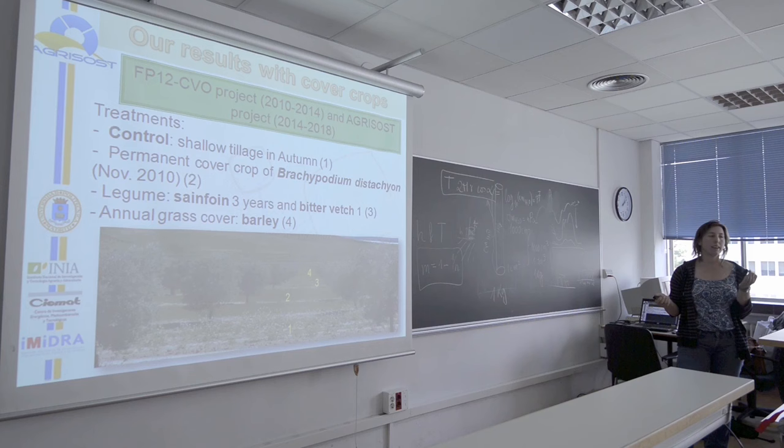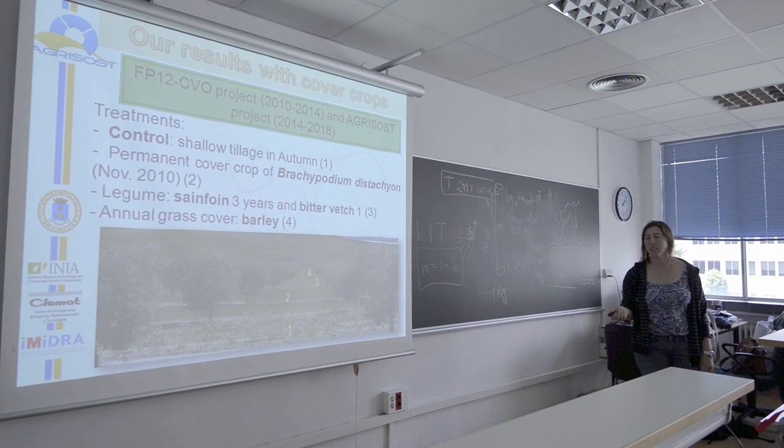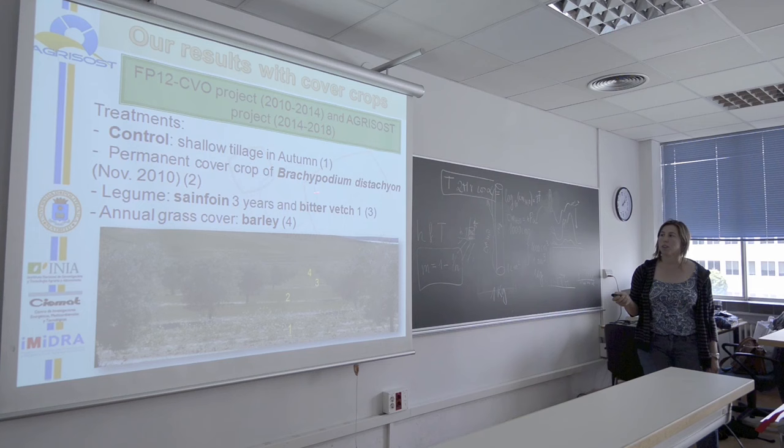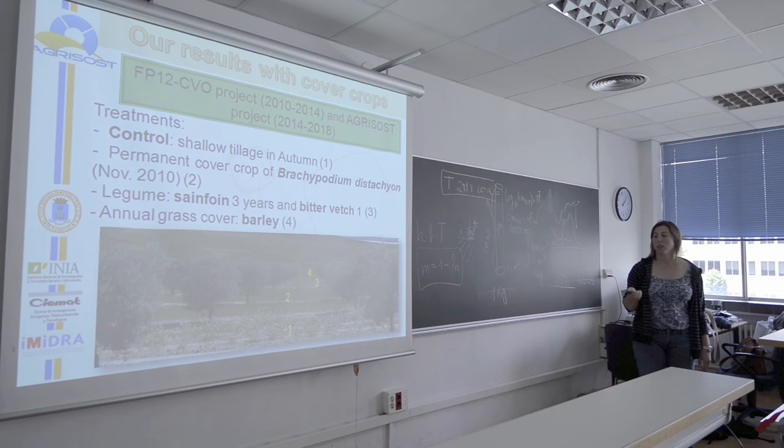The third treatment is legume. The first three years we used Scorpiurus muricatus, but it didn't work very well — it didn't cover the soil enough. So we changed at the fourth year to bitter vetch, and it worked very well. That is the species we are working with now. The fourth treatment is barley.